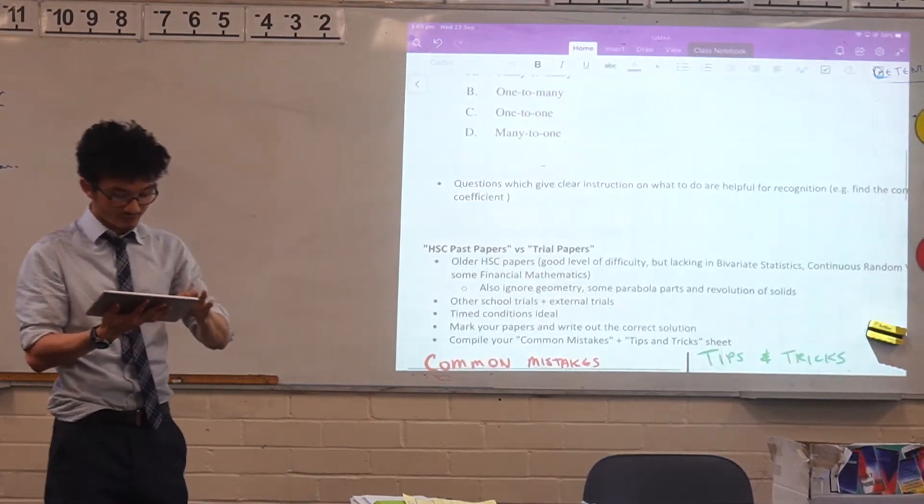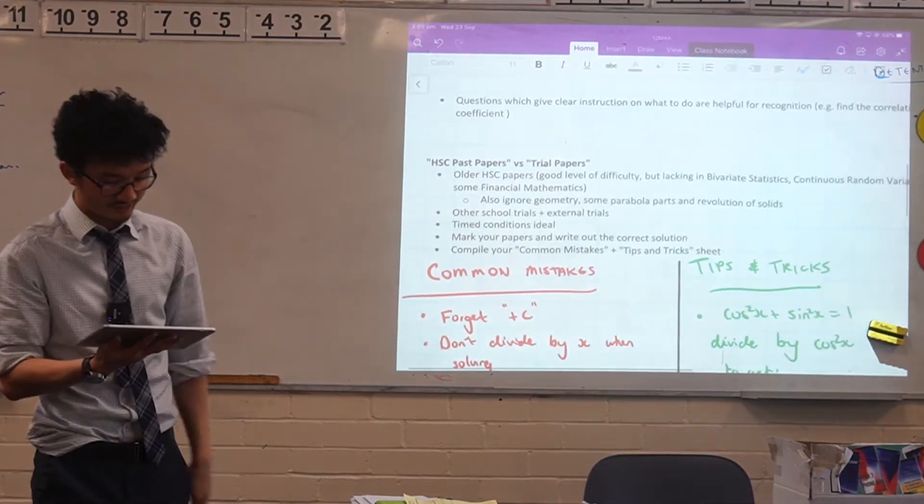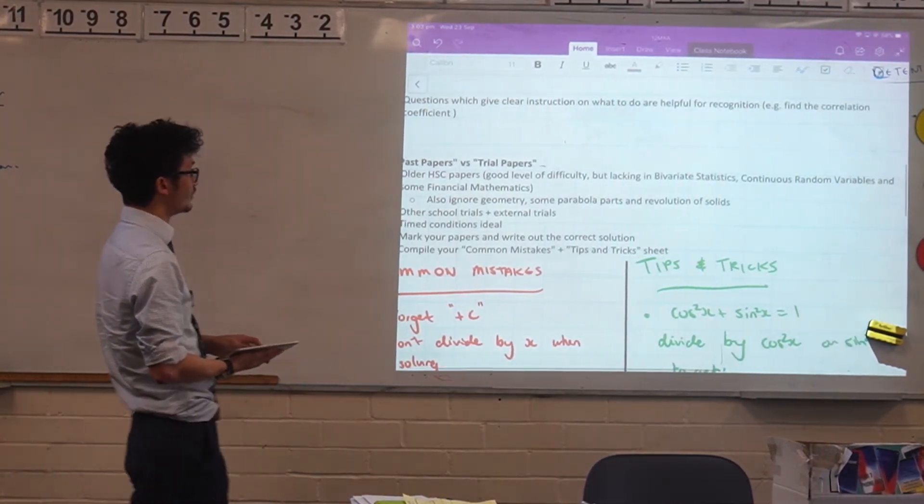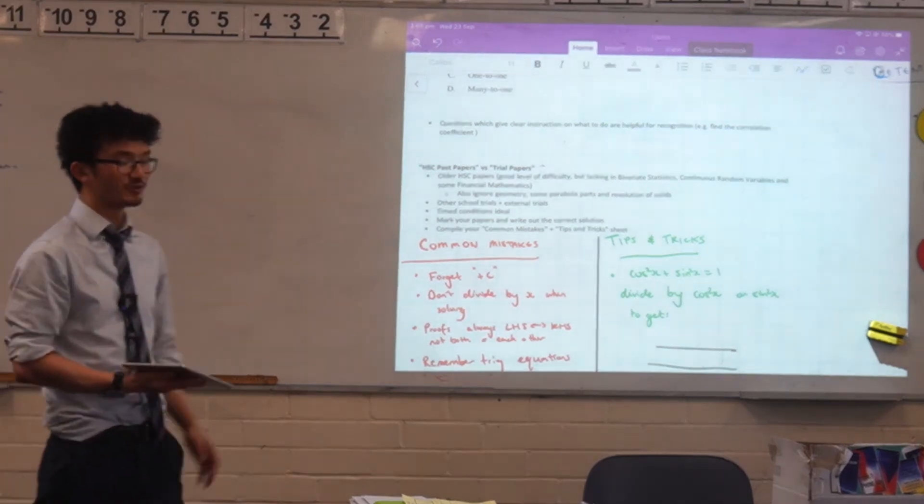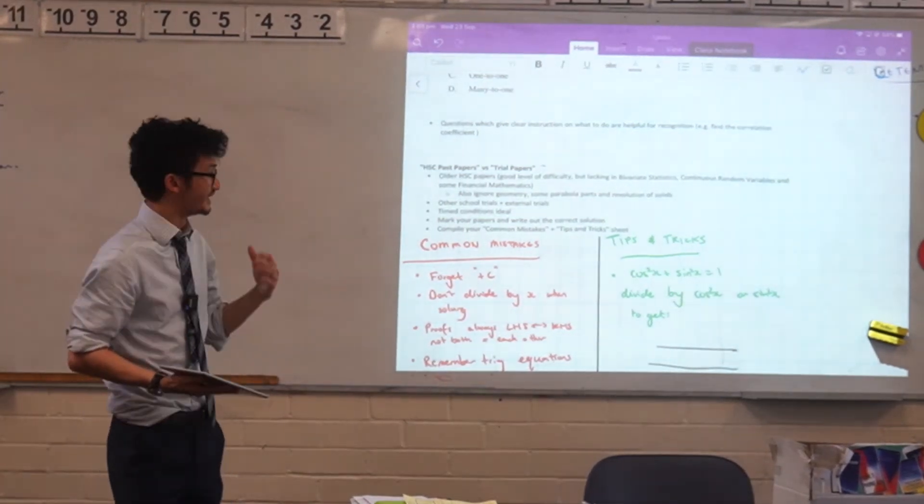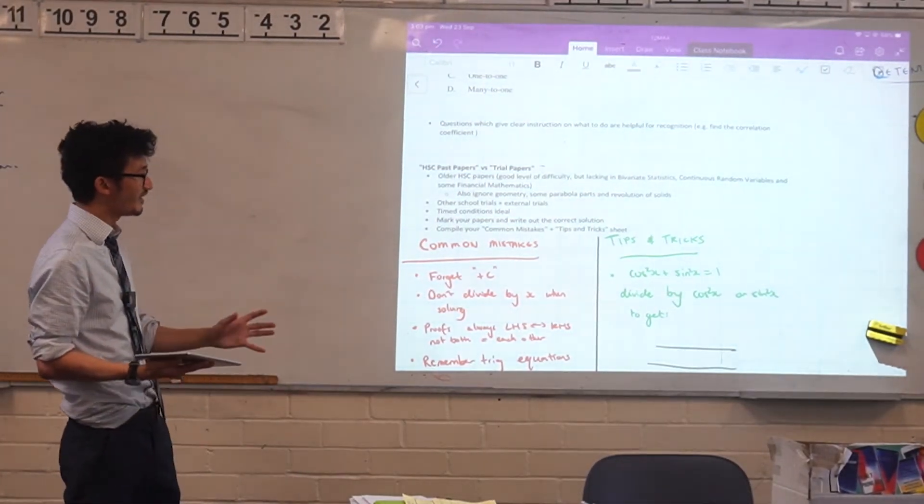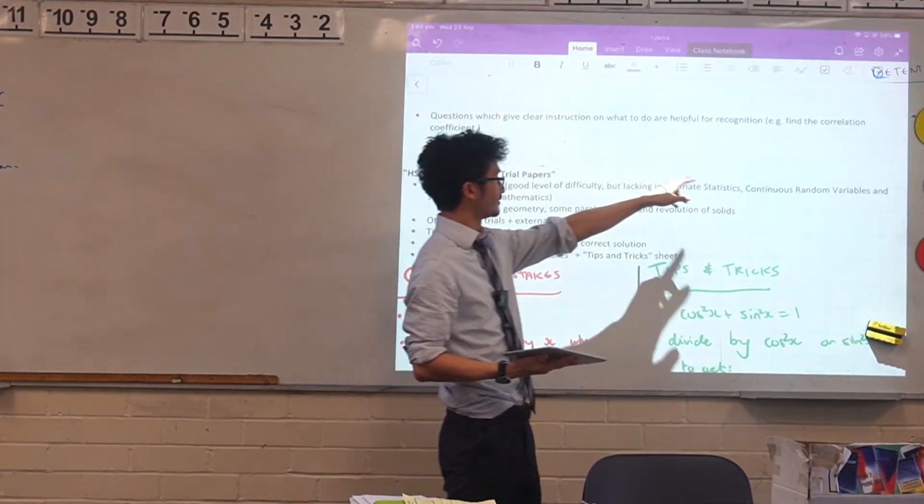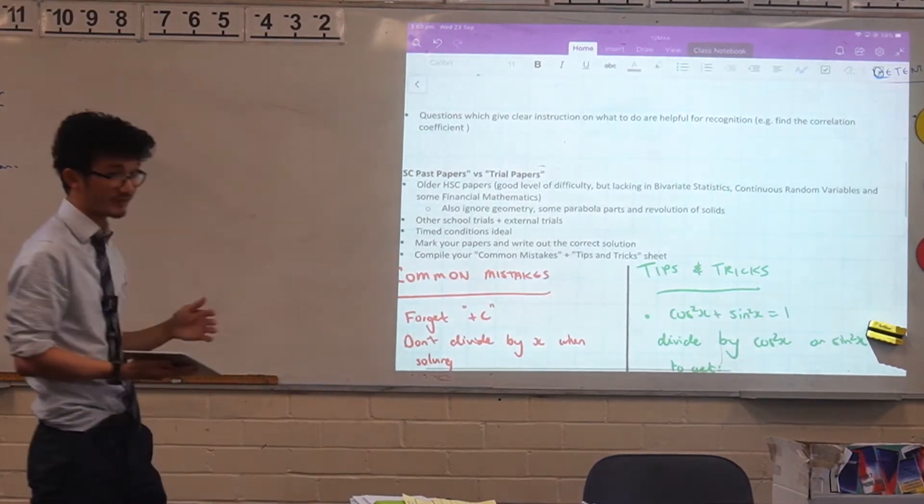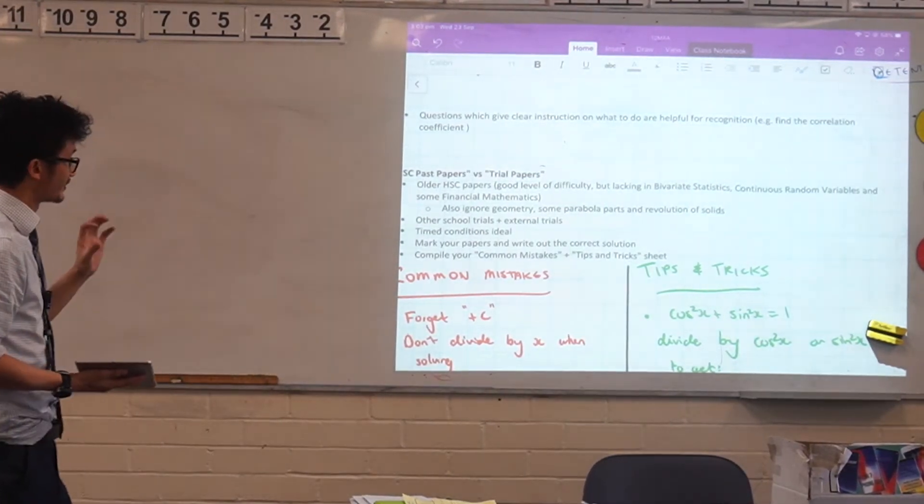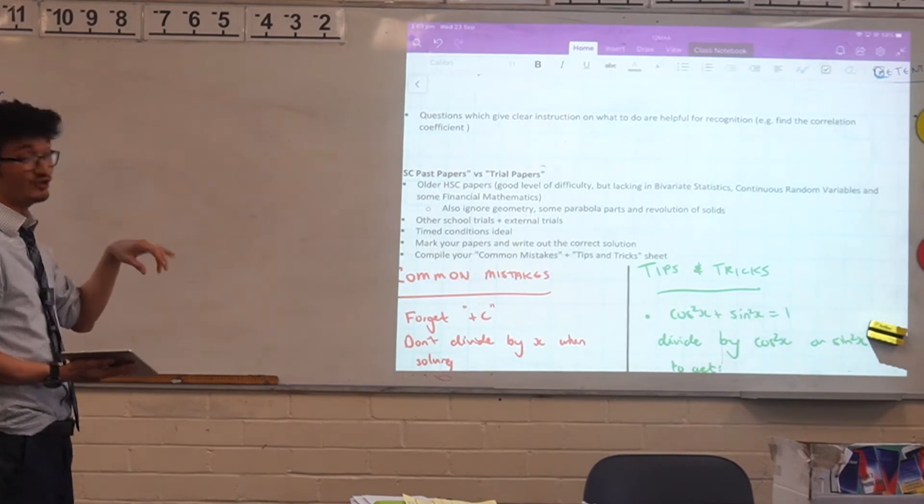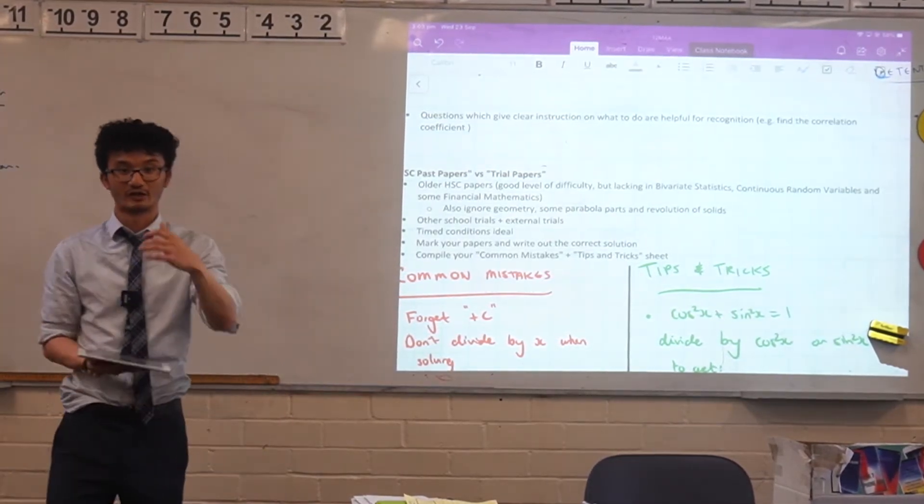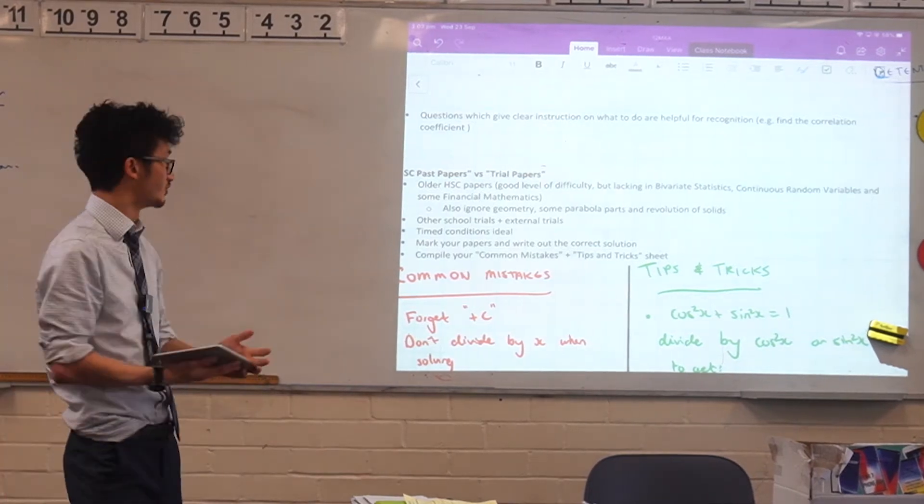Trial papers versus past papers. The issue is that we're in a new course now, and so the older HSC papers are going to be really good in terms of the difficulty that they have, but they're kind of lacking in the topics. So the specific topics that they're lacking in, like this stuff here, the statistics, random variables, some of the financial maths as well, that stuff is new and so you need to find other ways of getting that. So if you can find other school trial papers, that's a really good way of doing that.